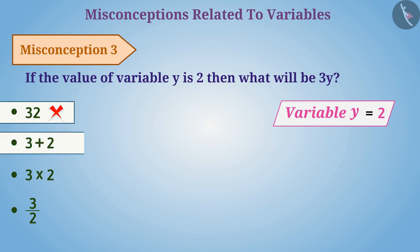Similarly, due to confusion, 3 plus 2 or 3 by 2 answers are given. These are all wrong answers. The correct understanding is 3y is equal to 3 multiplied by y, and with this understanding, 3 multiplied by 2 is the correct answer.